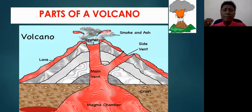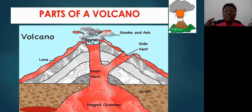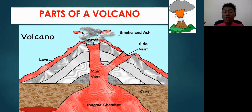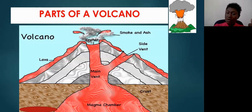Sometimes magma tries to escape through other sections of the volcano because there's so much pressure that some of it tends to ooze out along the sides, developing a feature called a side vent. At the very top of the volcano, you have an opening called the crater, which allows magma to escape during a volcanic eruption. Once the volcano erupts, magma comes out and you get lava flows.